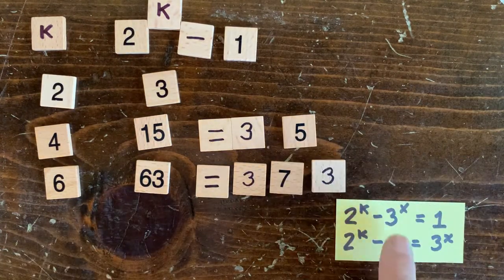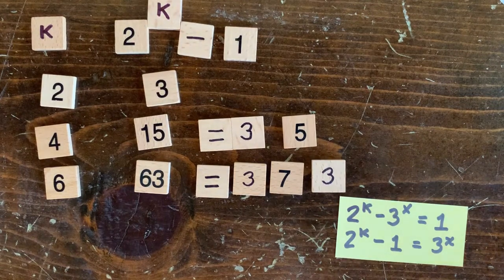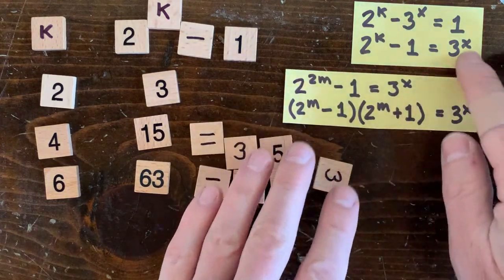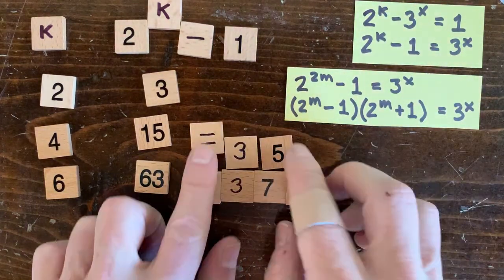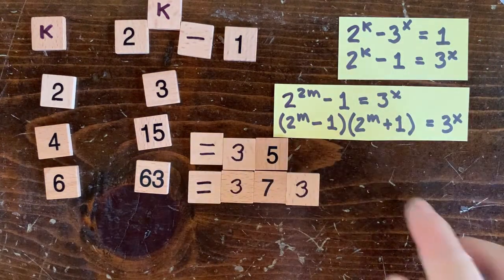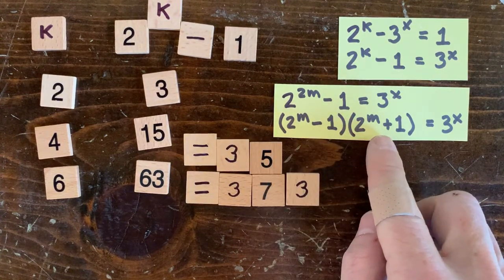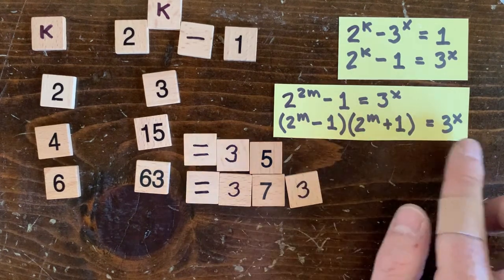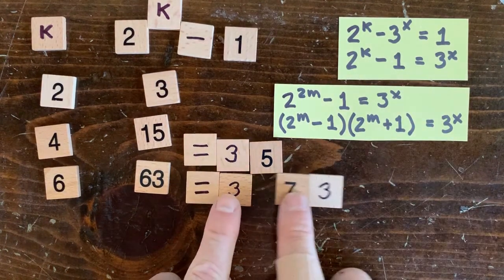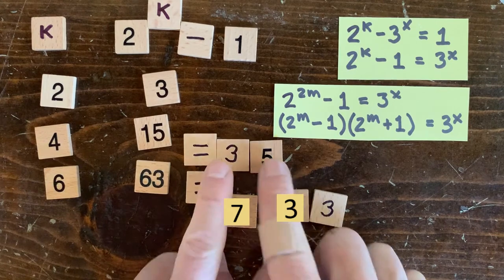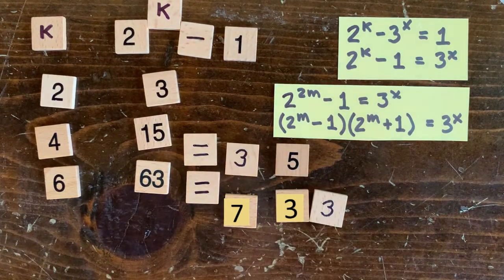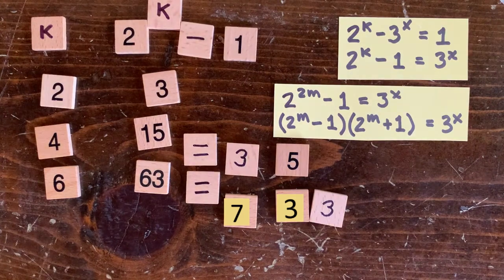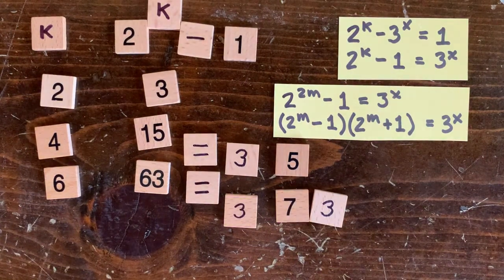So let's prove that with some eighth grade math. Since k is even, we can say k equals 2m and write 2 to the k minus 1 as 2 to the 2m minus 1. And we can factor that into 2 to the m minus 1 times 2 to the m plus 1. One of these factors is not divisible by 3 because they're 2 apart. So we've proven there's an additional non-3 factor. So considering both cases, odd k and even k, we've got an airtight proof. Thanks, Gersonides, for providing the confidence.